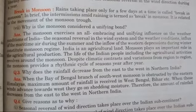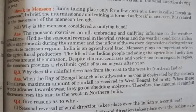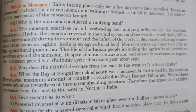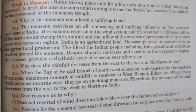India is an agricultural land and monsoon plays an important role in agricultural production. The life of the Indian people, including all agricultural activities, revolves around the monsoon. Despite climatic contrasts and variations from region to region, the monsoon provides a rhythmic cycle of seasons year after year. This is why the monsoon is considered a unifying bond.